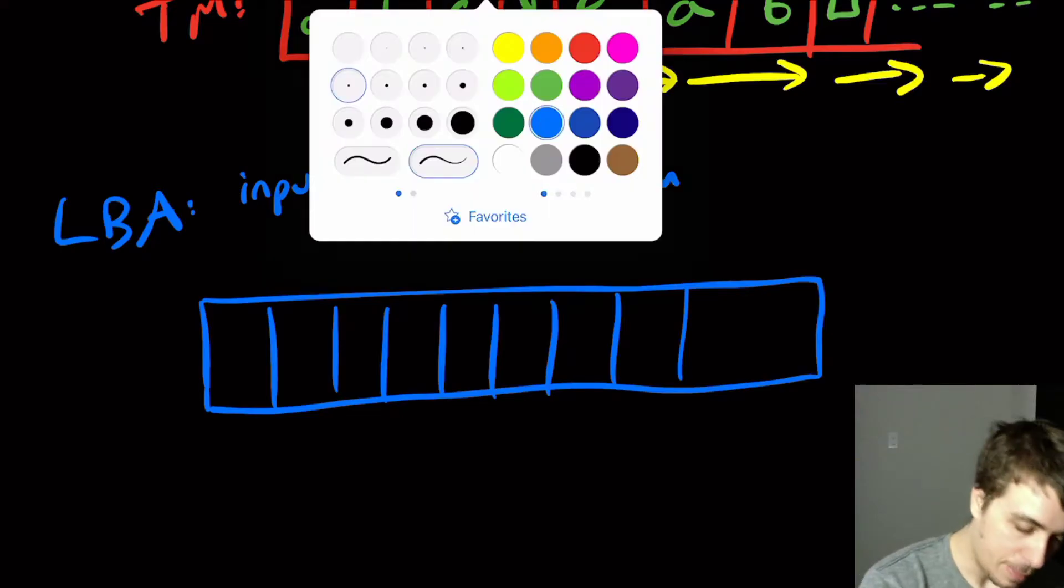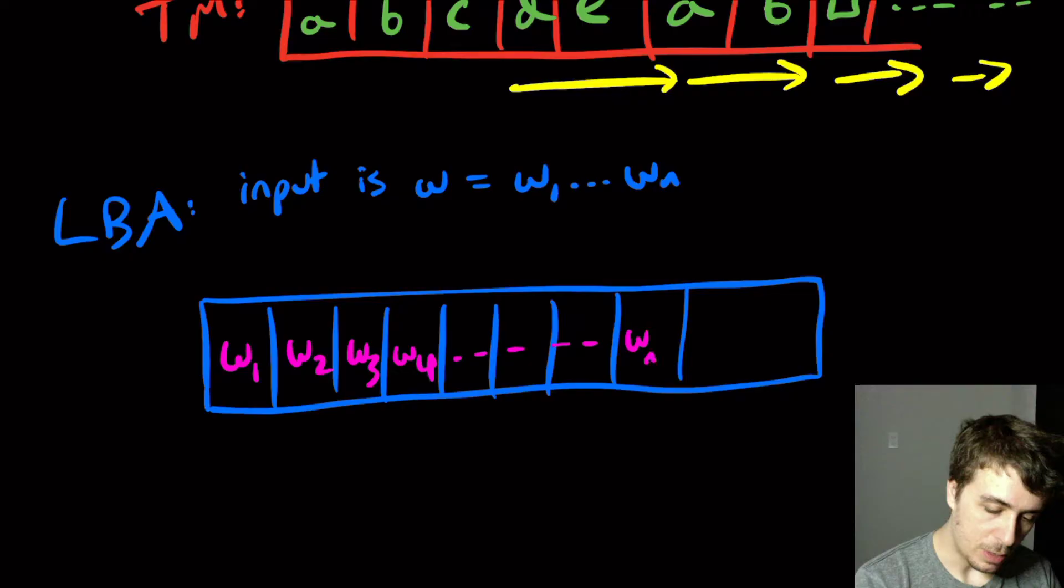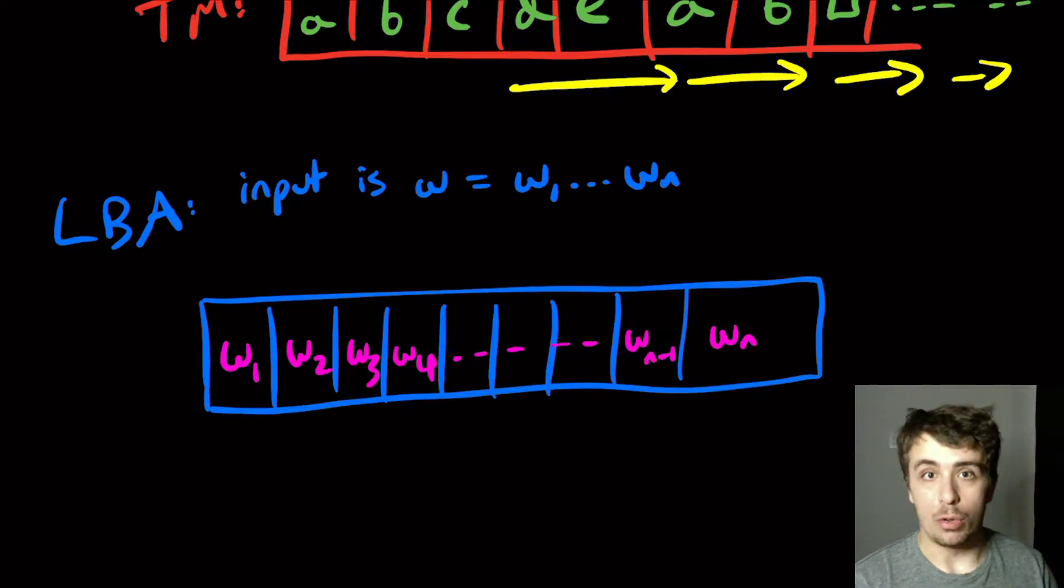So let's say we have W1 here, W2, W3, W4, up to let's say Wn minus 1, Wn. Okay, and so this is essentially the whole thing. But the problem is, well, let's...